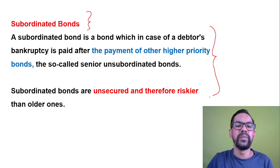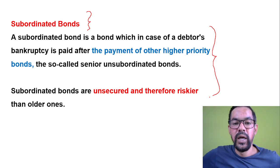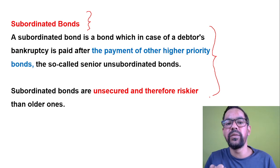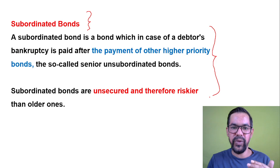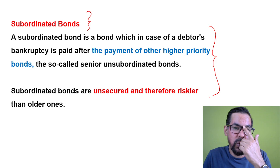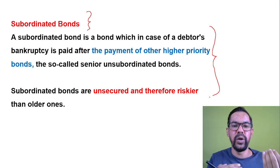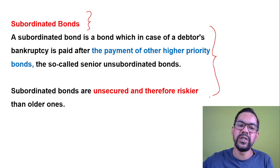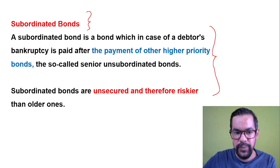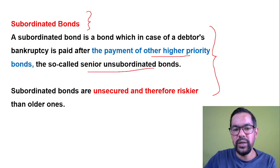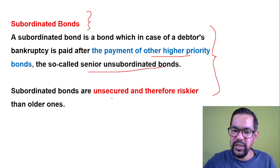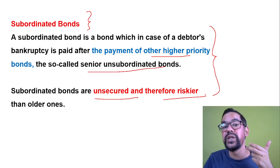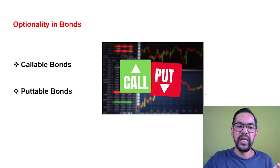Subordinated bonds, also called subordinated debt, are riskier in nature. In the event of a company's liquidation, subordinated bondholders have the least priority — repayment happens only after salaries and senior debt obligations are fulfilled. Because of this higher risk, subordinated bonds offer a higher rate of interest compared to other bonds. They are unsecured instruments.